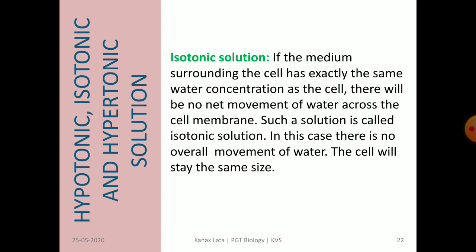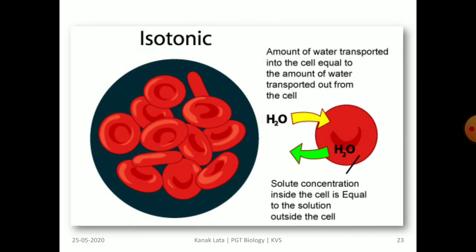In an isotonic solution, the medium surrounding the cell has exactly the same water concentration as the cell, so there will be no net movement of water across the plasma membrane and the cell remains the same size. The amount of water transported into the cell equals the amount transported out, because solute concentration inside equals that outside.